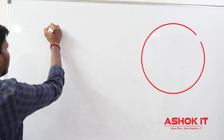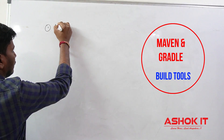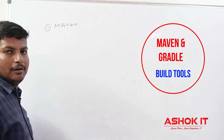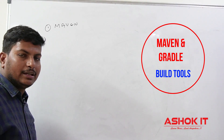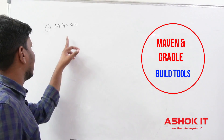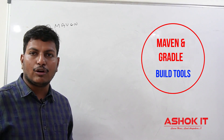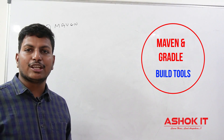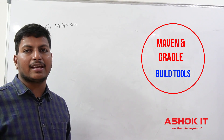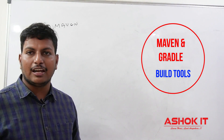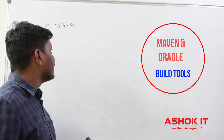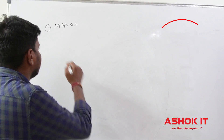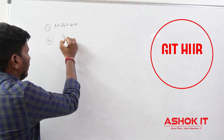The first one is Maven. Maven we will call as a build tool. Maven is used to automate the build process of our application, like downloading the dependencies of the project, compiling the source code, executing unit test cases, and packaging the project as a JAR file or WAR file. Those tasks can be automated by using Maven.